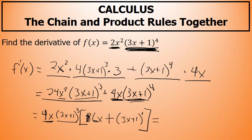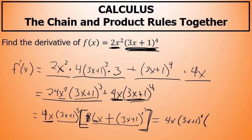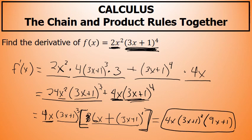Now, because that quantity is raised to the first power, I can drop the parentheses and combine like terms with the 6x. My final answer is 4x times 3x plus 1 to the third power times, and because there are no more parentheses inside the brackets, I write this as parentheses: 6x plus 3x plus 1 is 9x plus 1. So the final answer is 4x times 3x plus 1 to the third times 9x plus 1.